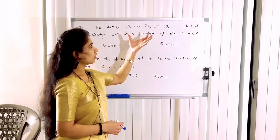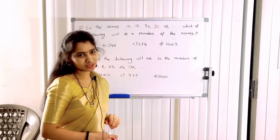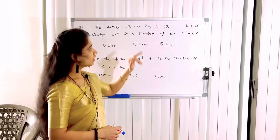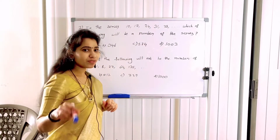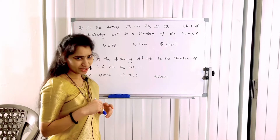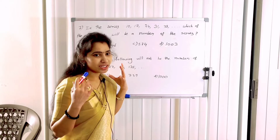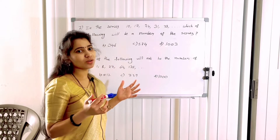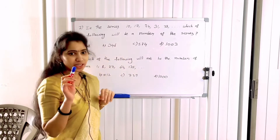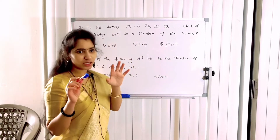There are consecutive numbers in the series with the same difference, so this is an Arithmetic Progression series. The difference is 7, so what number will be in the series?